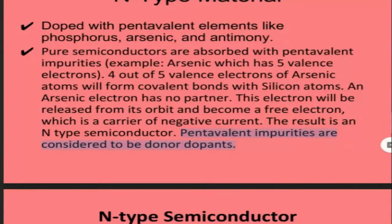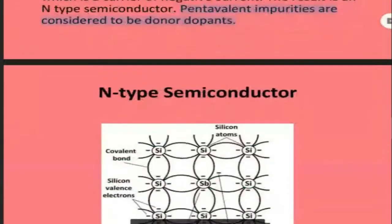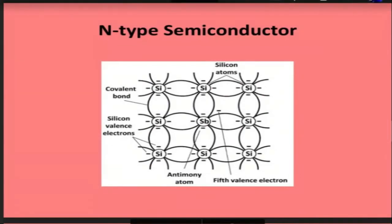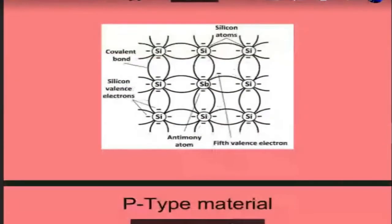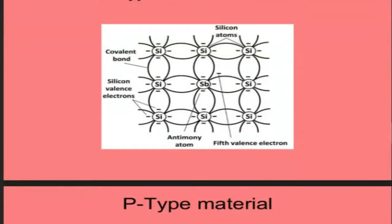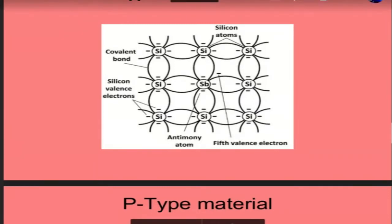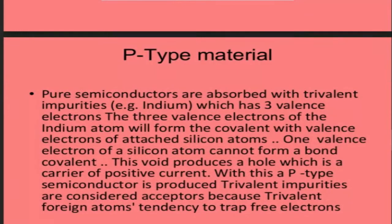This pentavalent impurity is considered a donor dopant — it donates an extra electron. The material now has an extra valence electron. This pentavalent impurity shares electrons with other atoms, forming covalent bonds. The fifth valence electron is released as a free electron. If we increase the number of antimony atoms in the silicon structure, we get an additional amount of free electrons.